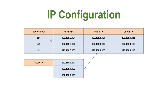In a three-node cluster example, the public IP, private IP, virtual IP, and SCAN IP are assigned accordingly. The public IP, virtual IP, and SCAN IP are all in the same subnet — for example, 192.168.1.x. Only the private IP is in a different subnet. The private IP is the only IP that should be in a different subnet; all others should be in the public subnet, which is the same subnet where your application servers reside.